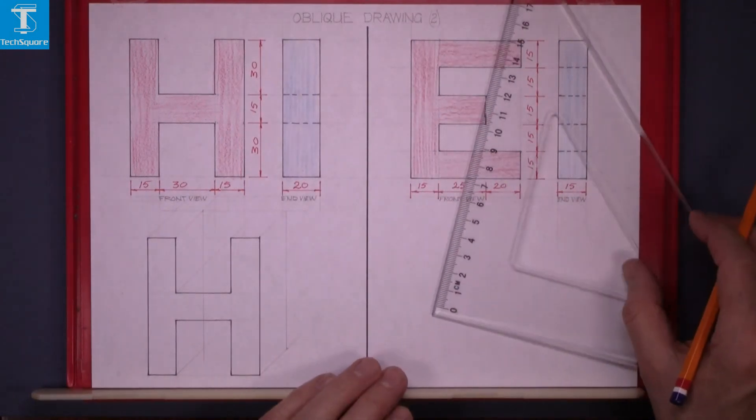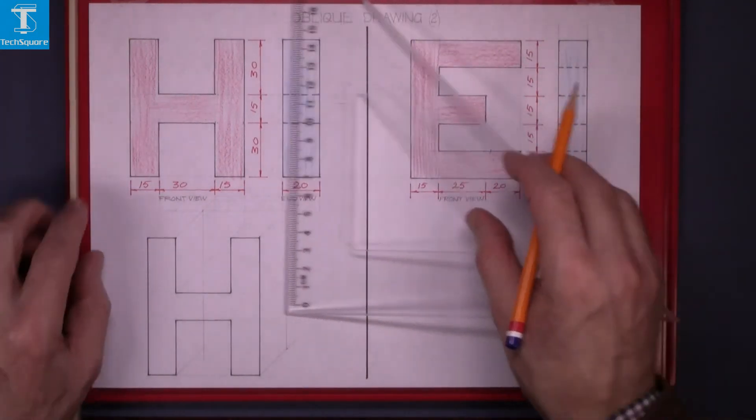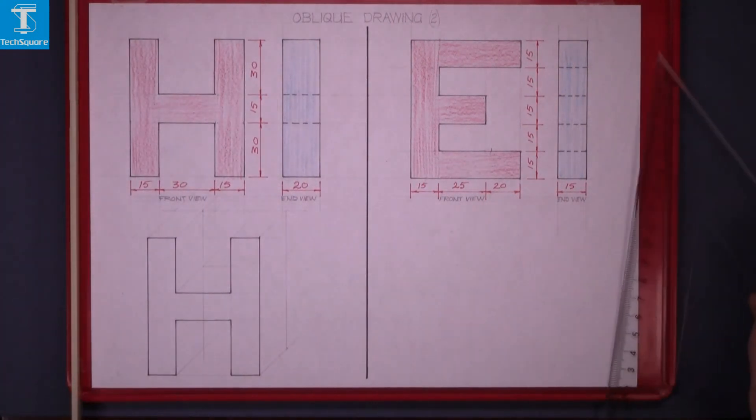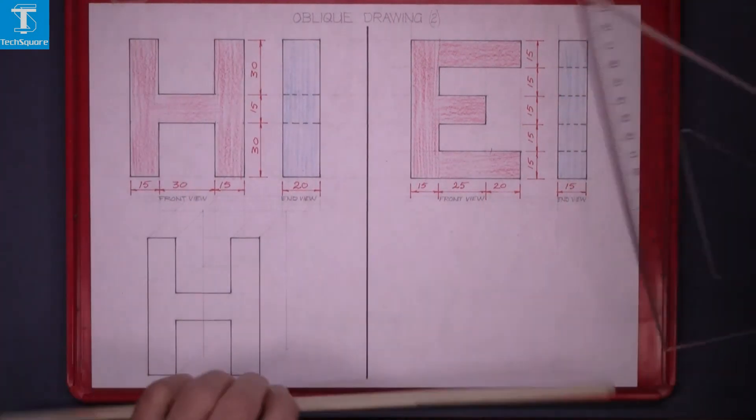Light line drawn down there and then draw horizontally across from that point there. And that's the letter H complete.